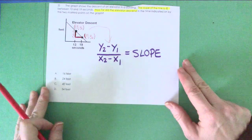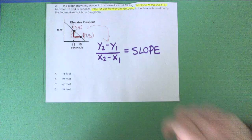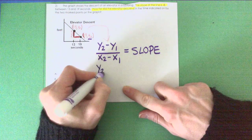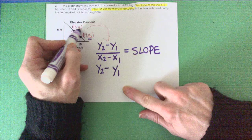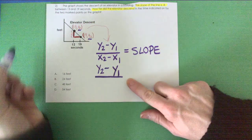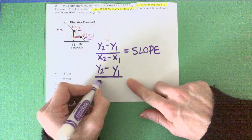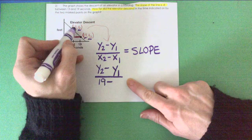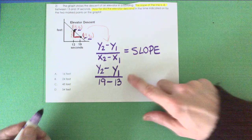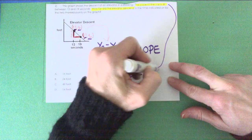If I fill things in, this is what it's going to look like. I'm going to have Y sub 2, which I don't know, minus Y sub 1, which I don't know. But I do know my X's. X sub 2 is 19 and X sub 1 is 13. And this is going to equal my slope from above, negative 8. See, I'm pulling that down here, negative 8.